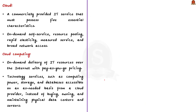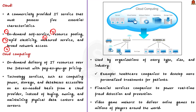First, let us see what is a cloud. Cloud is a commercially provided IT service. A cloud must possess five essential characteristics: on-demand self-service, resource pooling, rapid elasticity, measured service and broad network access. Cloud computing is the on-demand delivery of IT resources over the internet. So instead of buying, owning and maintaining physical data centers, you can access technology services on a needed basis from a cloud provider — for example, Amazon Web Services.